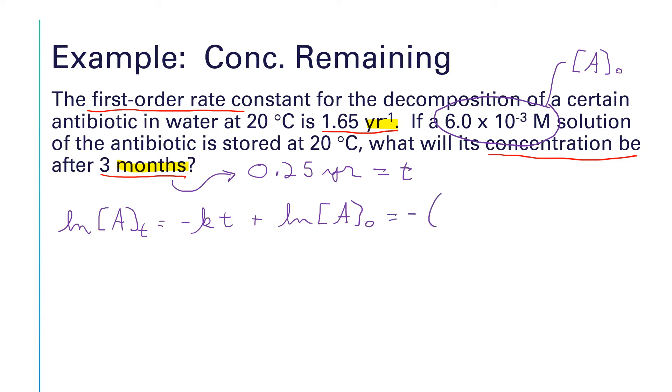We're going to have minus k and k is 1.65 per year times a time of 0.25 years plus, whoops, I'm running out of room here, the natural log of a naught, which is 6.0 times 10 to the minus 3.